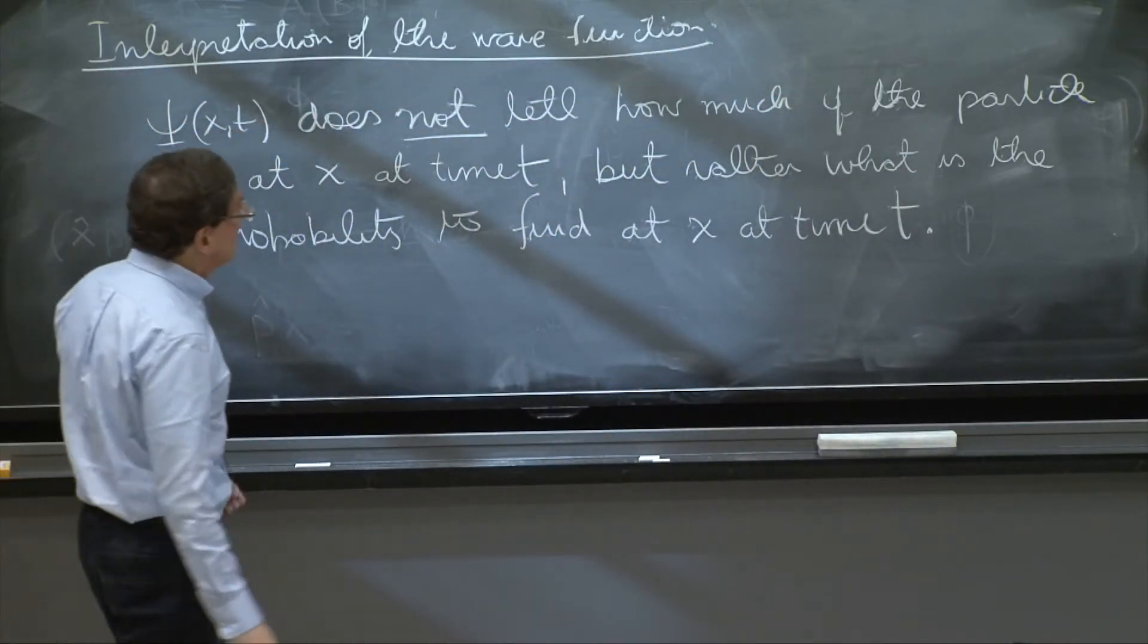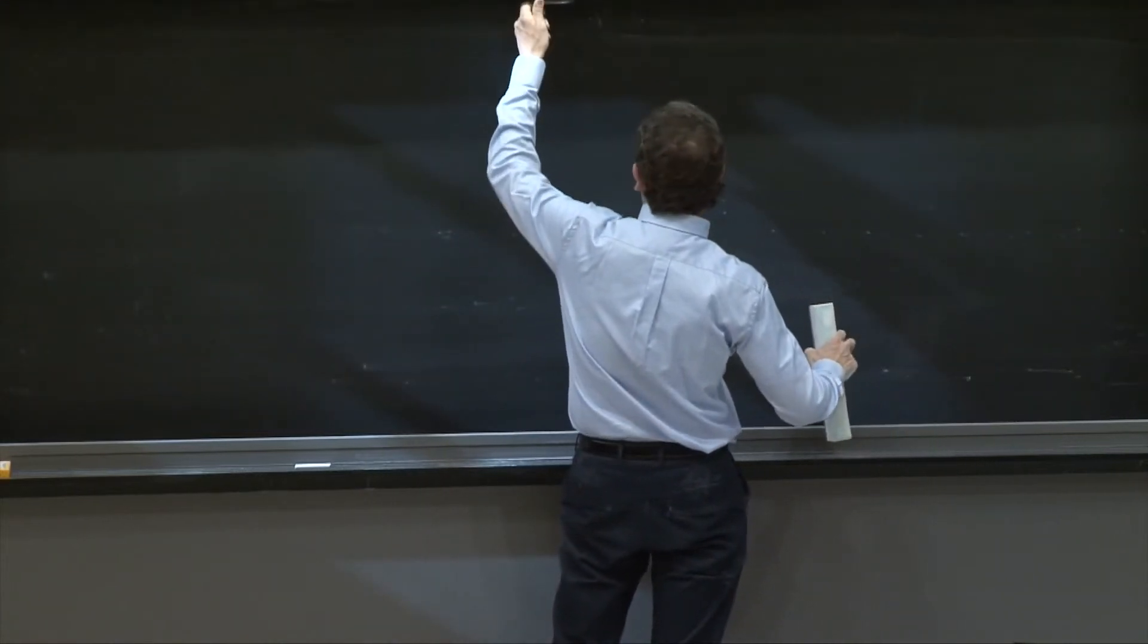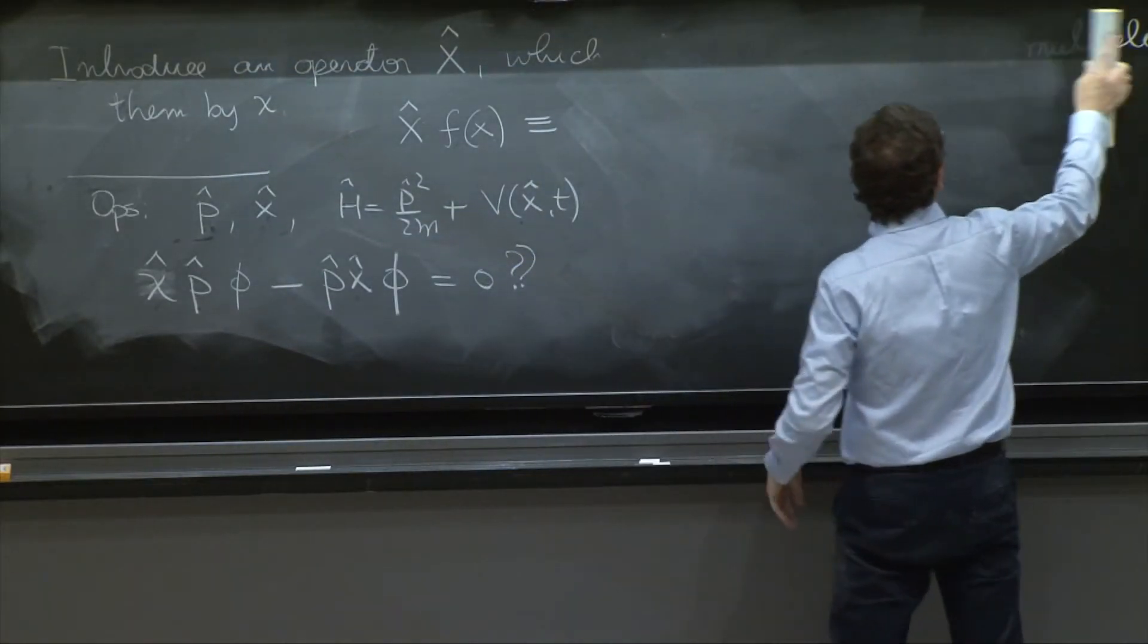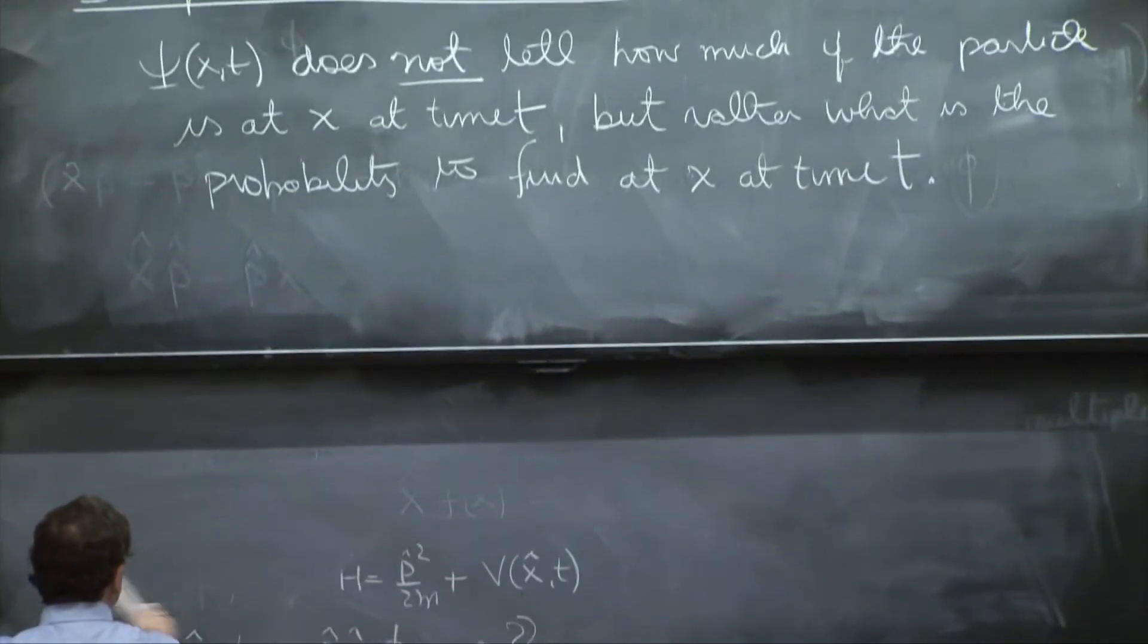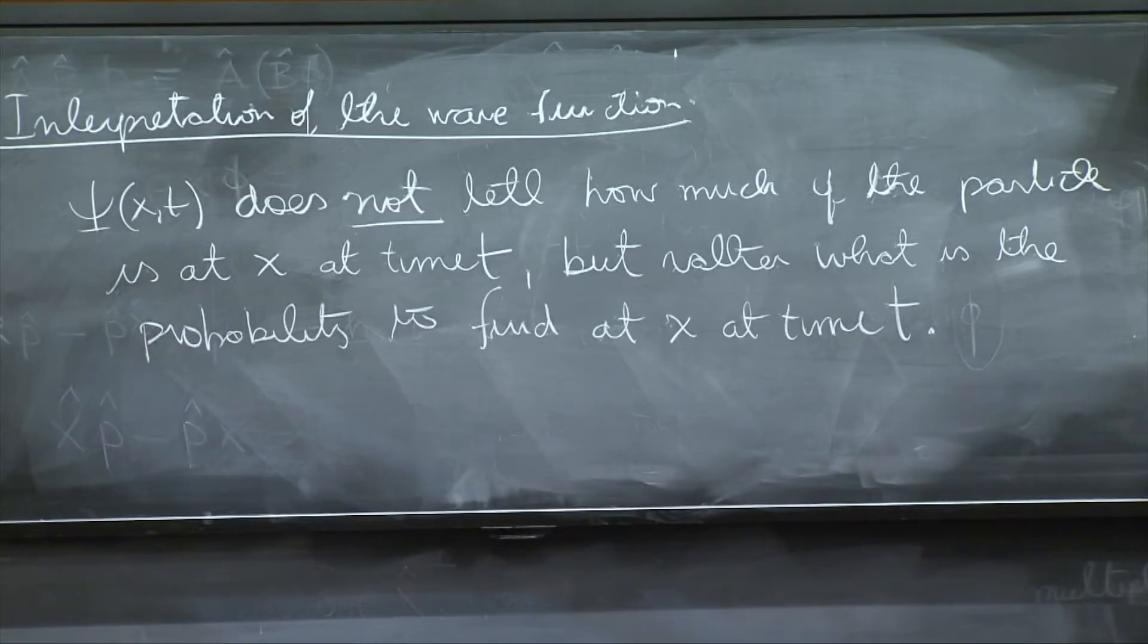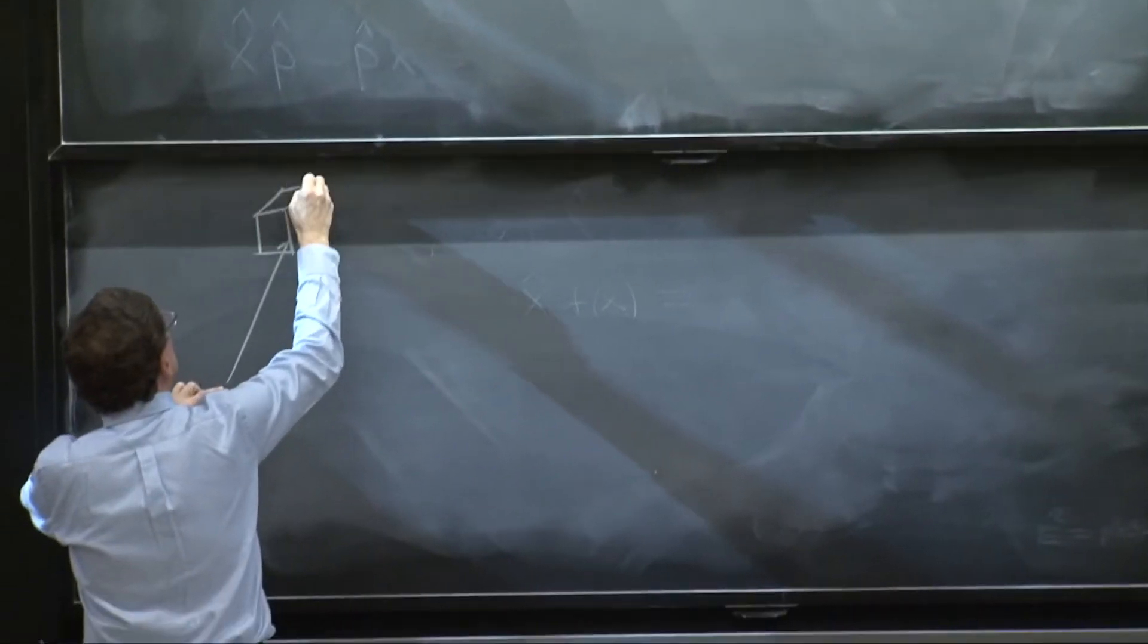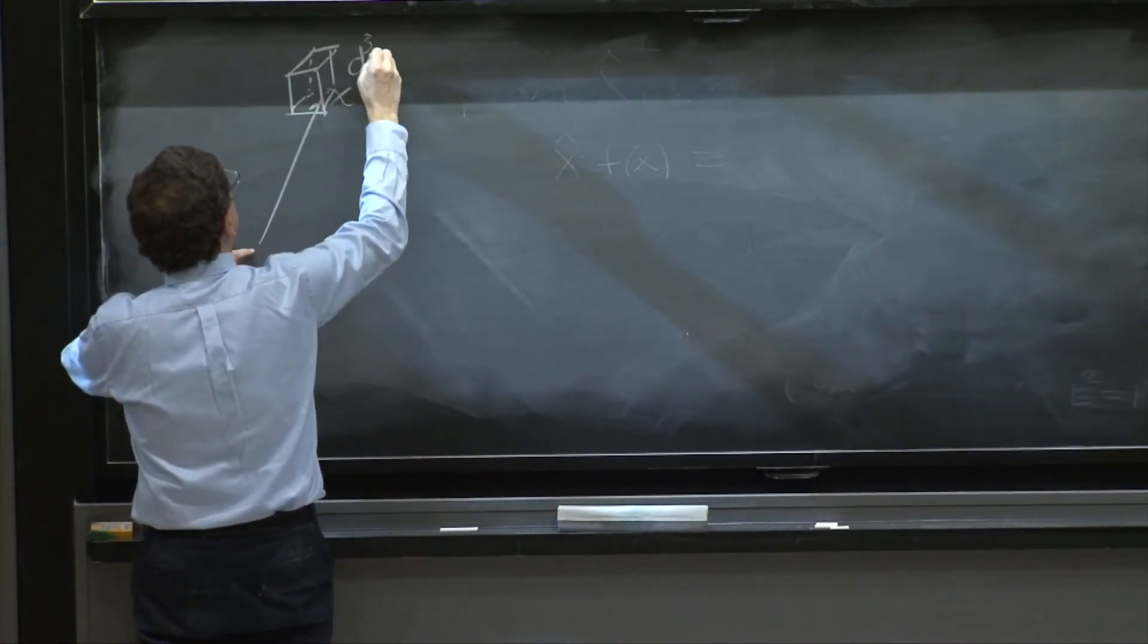It's not what fraction of the particle you get. How much of the particle you get? It's the probability of getting it. But that requires a little more precision, because if a particle can be anywhere, the probability of being at one point typically will be zero. It's a continuous probability distribution. So the way we think of this is we say we have a point x. Around that point x, we construct a little cube, d cube x.